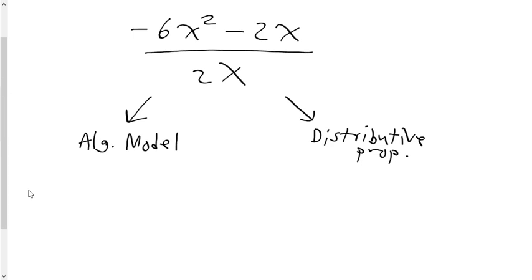One practice question: binomial divided by a monomial. Negative 6x squared minus 2x is your binomial, divided by the monomial of 2x.